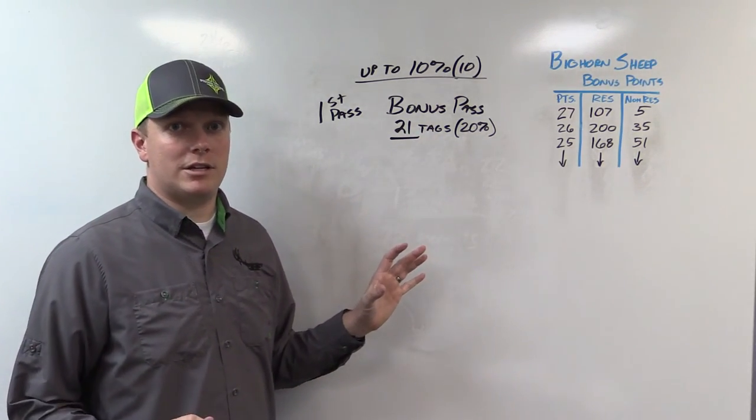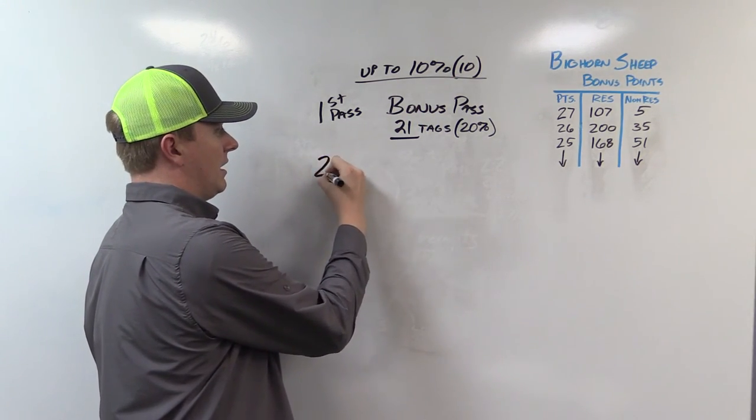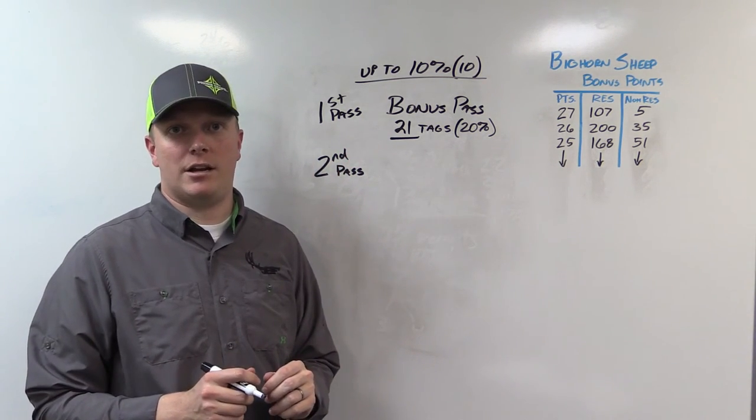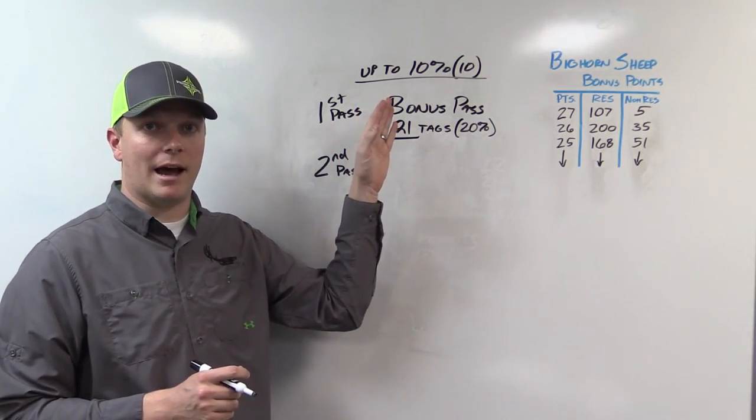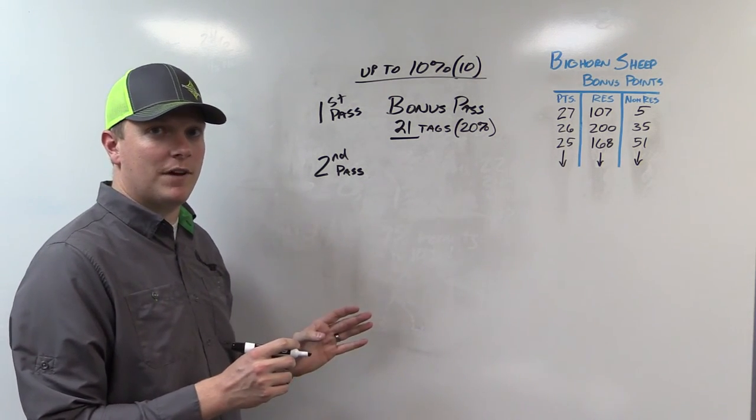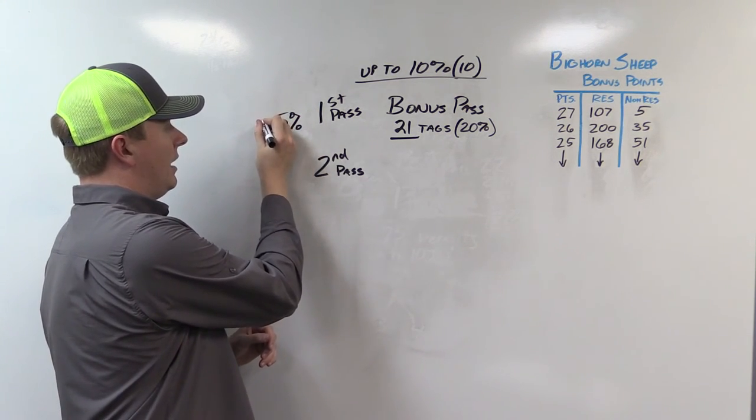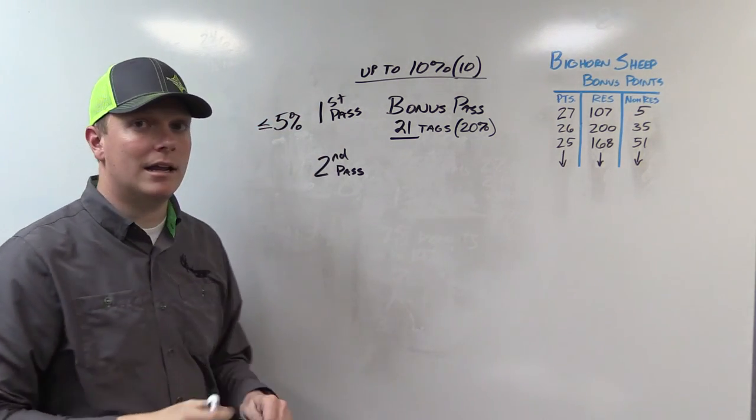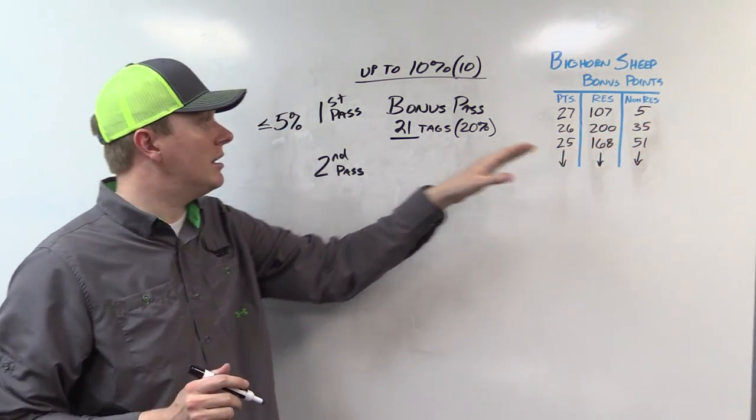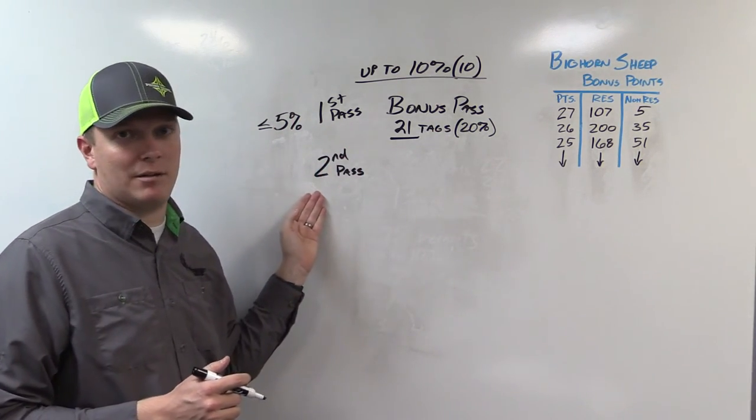Now this is what's new for this year. Our 10% is divided between first pass and our second pass. This is the change for 2016. The 10% non-resident cap is divided between first and second pass. The game and fish has guaranteed that it can't be over 5% in the bonus pass. This isn't going to matter on sheep because there's only five non-residents going into this draw. We still have up to 10% in our second pass.